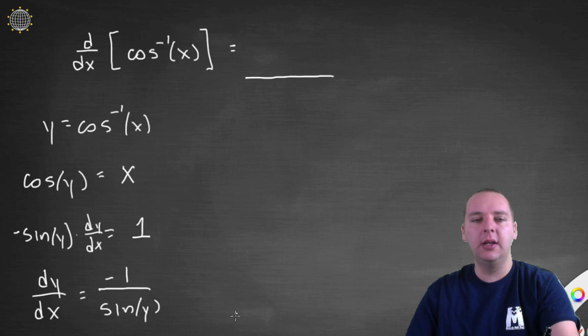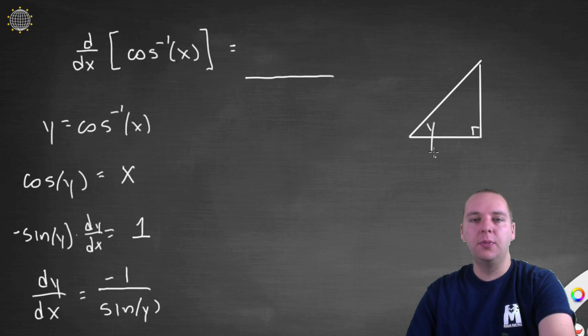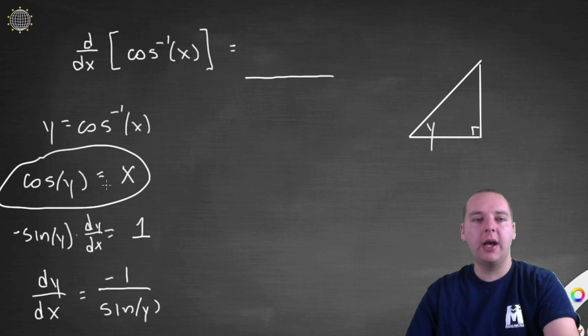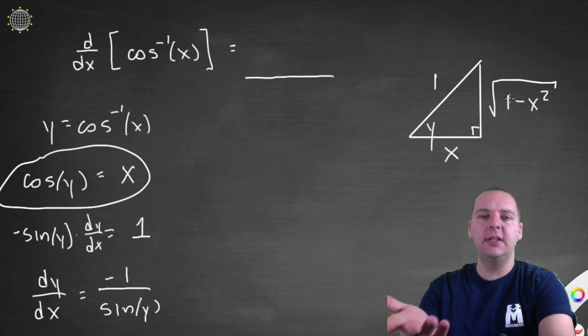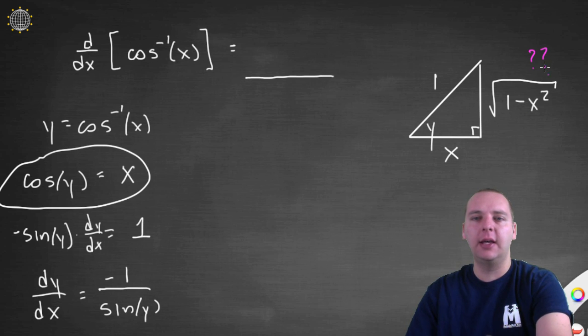So dy dx would be negative 1 over sine of y, we take the sine y and divide it to the right hand side. Now what is sine of y though? Well again, we need a right triangle real quick. We'll put our angle here. I'm looking at this relationship. Cosine of y equals x, so cosine of this angle would be x, also called x over 1. So cosine ratio is adjacent over hypotenuse, adjacent over hypotenuse. That would make this unknown leg right here, the square root of 1 minus x squared. I just used the Pythagorean theorem. Solve for a. And a would be the square root of 1 minus x squared.